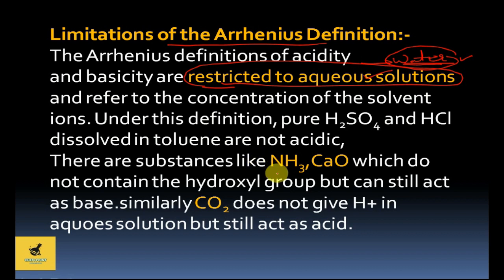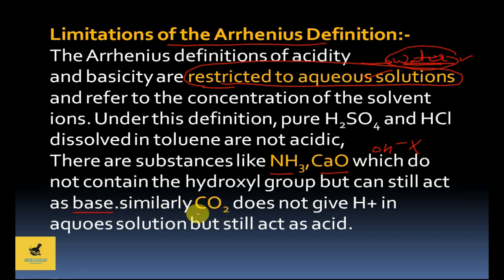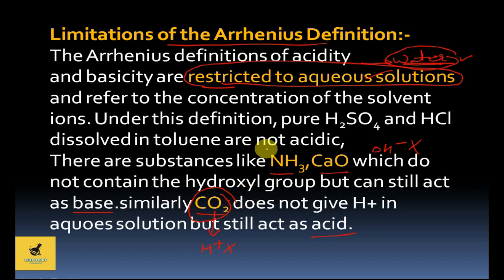For example, substances like NH₃ and CaO do not give OH⁻ ions in water, yet they are still called bases. Similarly, carbon dioxide does not release H⁺ ions in water, yet we know carbon dioxide as an acid. The Arrhenius concept could not explain all these things — this was the limitation of the Arrhenius concept.